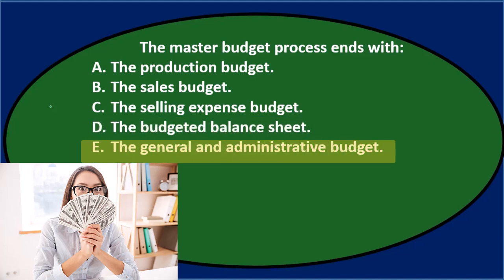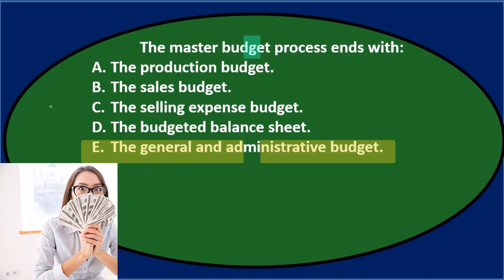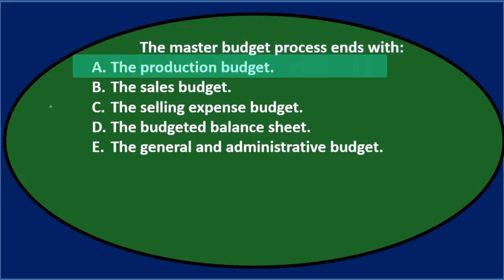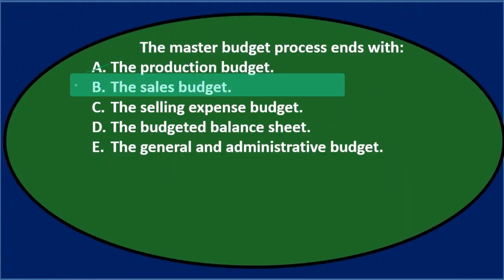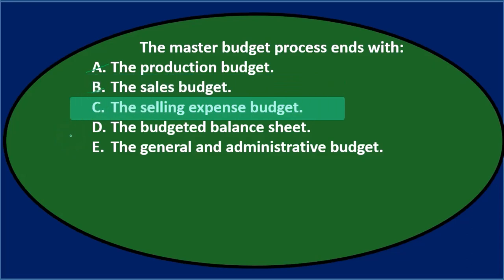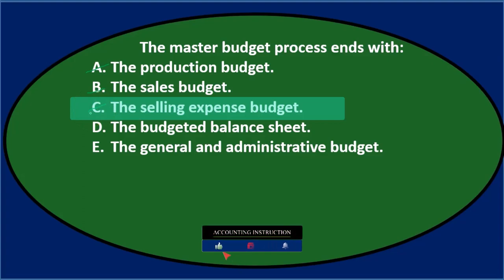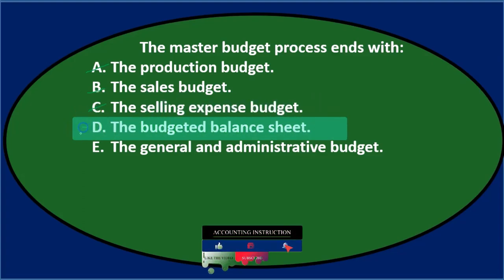Let's go through this again using the process of elimination. The master budget process ends with — A, the production budget: you'd think that's somewhere towards the top because we need to know how much we're going to produce, so that's not the ending point. B, the sales budget: that's one of the very first things we need — that's where we begin, not where we end. C, the selling expense budget: that's probably somewhere in the middle — it doesn't seem like the finale. D, the budgeted balance sheet: that sounds fully done, completed — I'll keep that one for now.